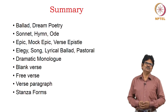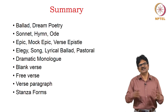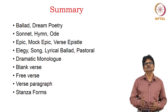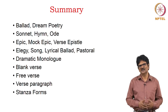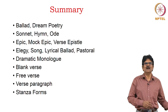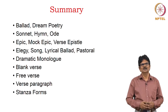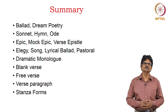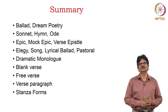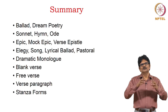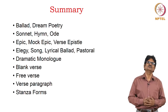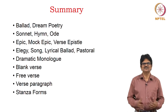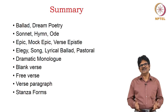In this presentation, what we have looked at is the different kinds of poems and the stanza forms in English literature. We dealt with ballad, dream poetry, sonnet, hymn — a poem in praise of something, possibly God — ode, epic, mock epic, verse epistle, elegy, song, lyrical ballad, pastoral elegy. We also spent time on dramatic monologue, defined blank verse, differentiated it from free verse, and saw how poetry is arranged in verse paragraphs and stanza forms. Hope you have learnt many things about the way in which poems are arranged in lines on pages. Thank you.